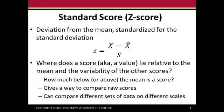We can ask where does the score or value that we have lie relative to the mean and the variability of the other scores. We can ask how much below or above the mean is a certain score. This gives us a way to compare raw scores because this is actually unitless. If you thought of what the units would be on the numerator and the denominator, they would cancel each other out. You can look at relative values and that can allow us to compare different sets of data that are on completely different scales.